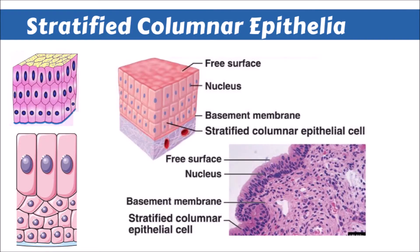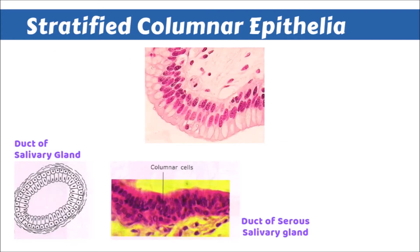In the third diagram, the free surface is observed and the basement membrane is located below, overlying the vascular connective tissue. On the right side, lower side, in the fourth diagram, we can observe the basement membrane and the Stratified Columnar Epithelial cells.